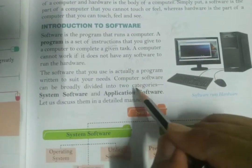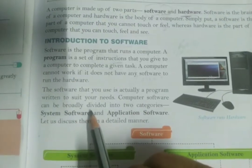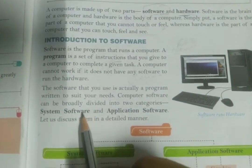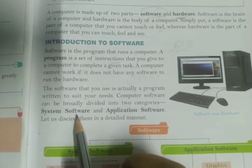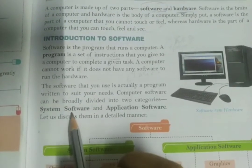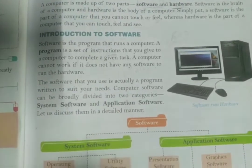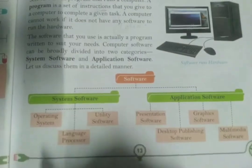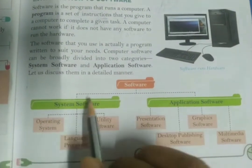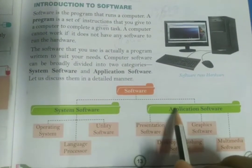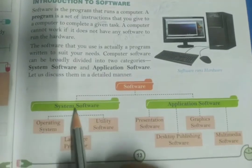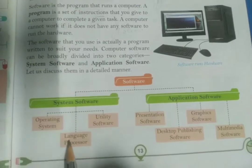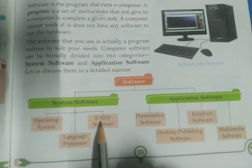Now we need to know the categories of software. We can categorize software into two parts: system software and application software. System software is further divided into three parts: operating system, language processor, and utility software.